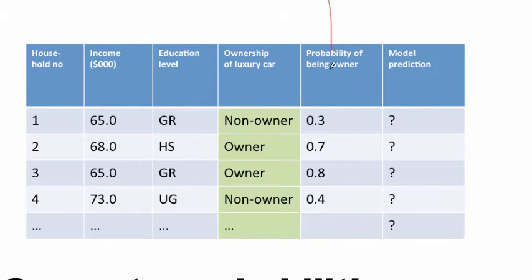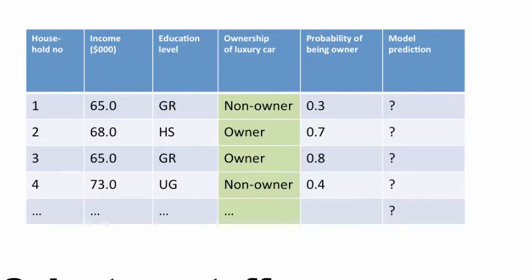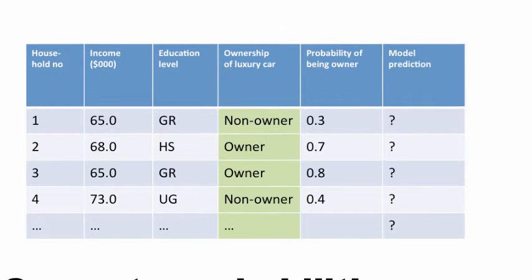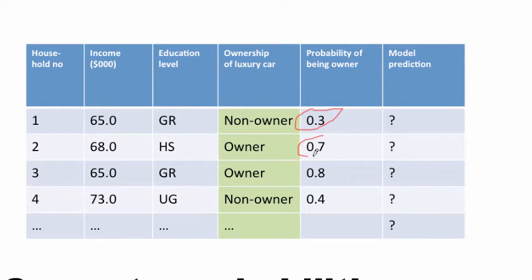Notice this column here — it's showing the probabilities of something being in a particular class. Based on some mechanism, each technique has its own way of doing it. The model was able to classify this first person as having only a probability of 0.3 of being an owner, whereas the second person has a probability of 0.7 of being an owner.